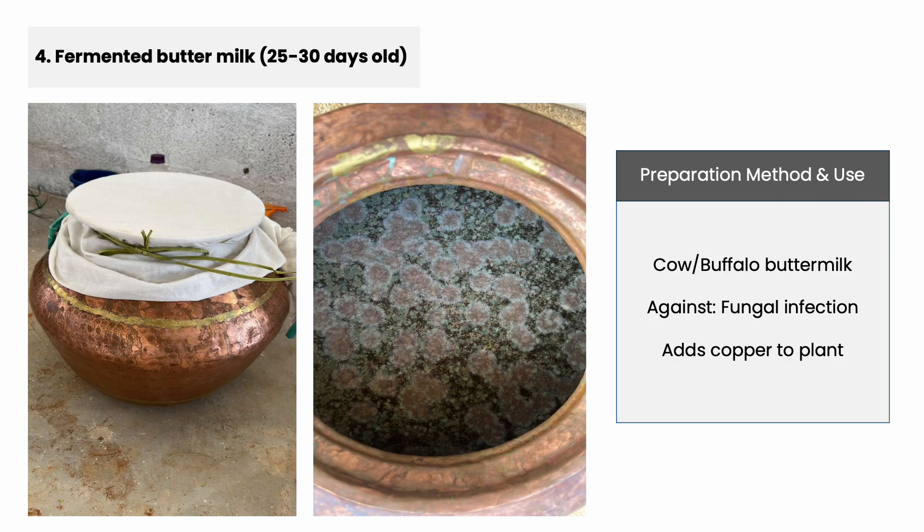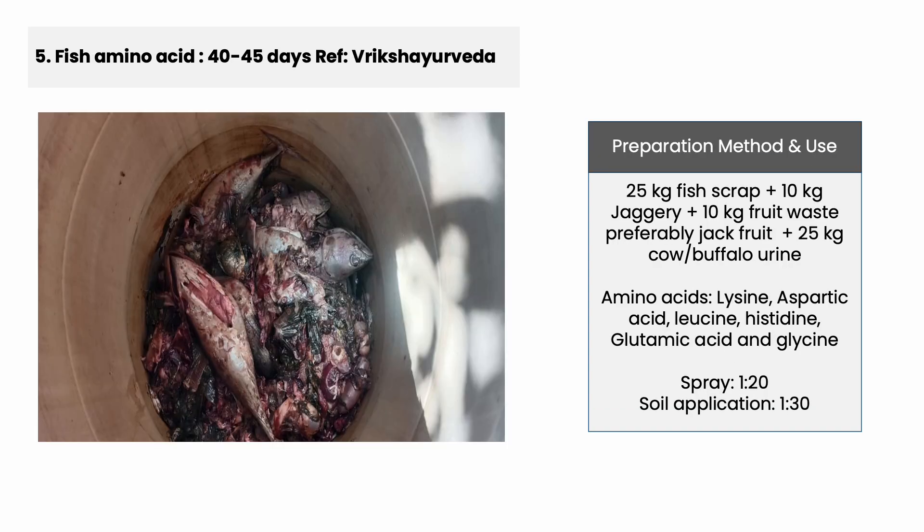This is fermented buttermilk. We use copper vessels especially for this fermentation. Apart from the buttermilk fermentation, we get fantastic copper-enriched liquid solutions which are helpful for flower initiation and pollen formation.